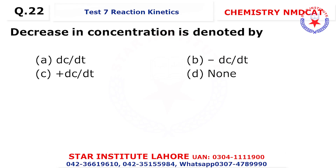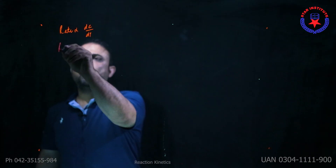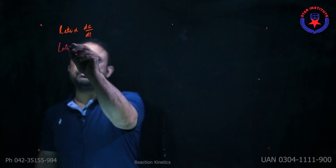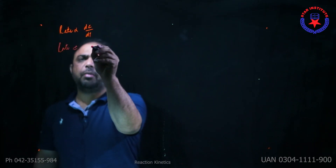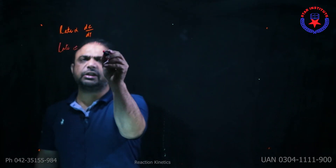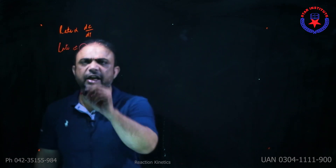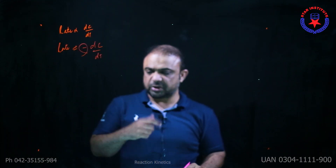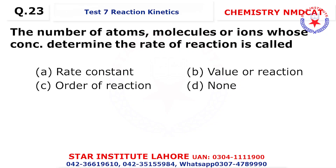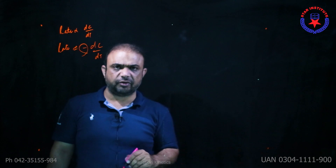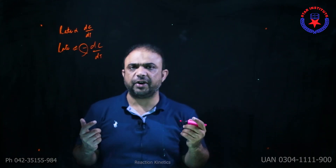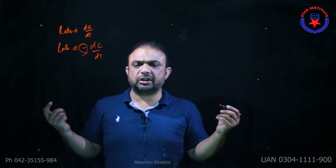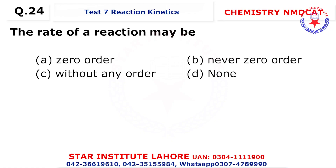The answer is choice D. Small 't' represents time and capital 'T' represents temperature. Question 22: Decrease in concentration is denoted by rate = -dc/dt; the negative sign indicates the decrease in concentration. Question 23: The number of atoms, molecules, or ions whose concentration determines the rate of the reaction is said to be the order of reaction.